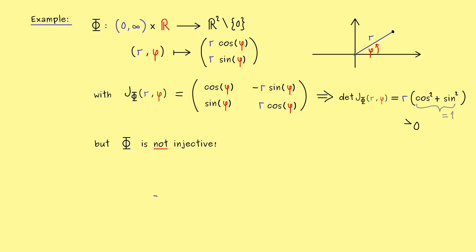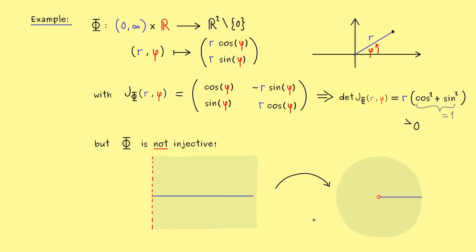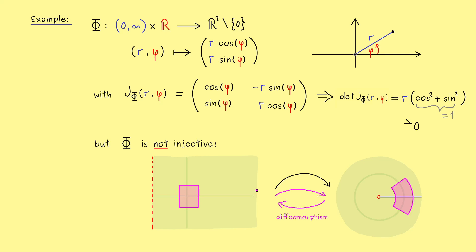In the picture, our domain has the x-direction from 0 to infinity and the y-direction as the whole number line. We know capital Φ maps this to R2 without the origin. A horizontal line doesn't change, but every vertical line becomes a circle in the image. So we understand what happens locally: if we restrict the domain to a small rectangle, we get a small part of the disk on the right-hand side. For these two small sets, there are no problems with injectivity or surjectivity. Restricting Φ to these sets gives a nice bijective map, and since the Jacobian determinant is never zero, we get a nice diffeomorphism.